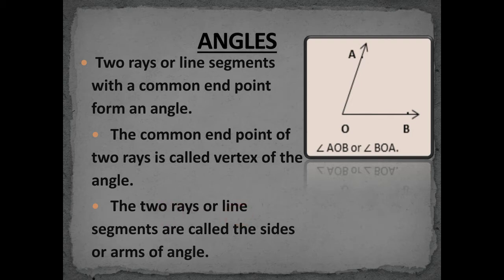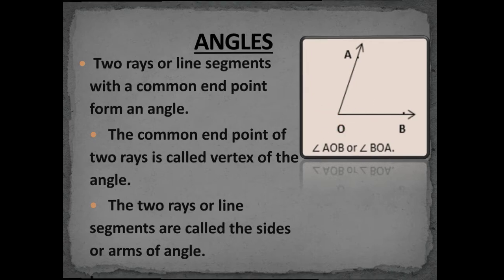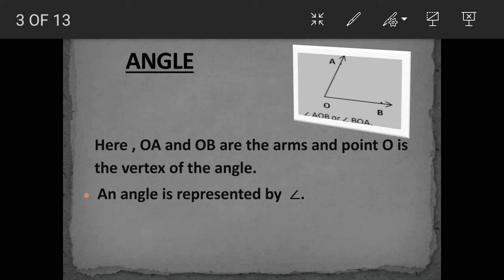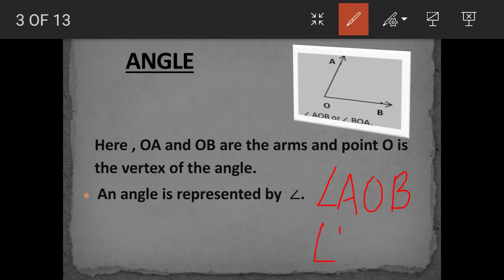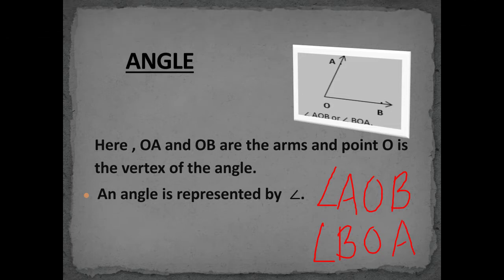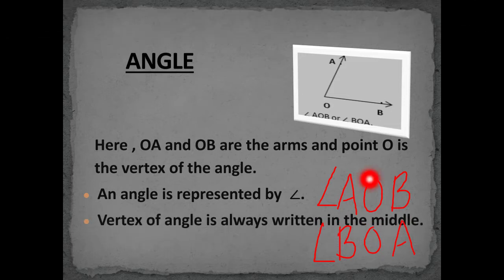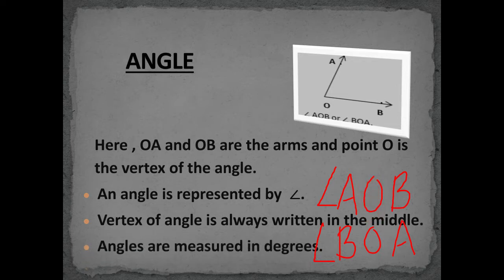Now here we have angle AOB. To represent the angle, we use the tilted L symbol. To represent angle AOB, we first write the tilted L, then write the alphabet A, then vertex O, and then B — this is angle AOB. We can also write it as tilted L, then B, O, A. Note: the vertex of the angle is always kept in the middle; here we have written O in the middle.